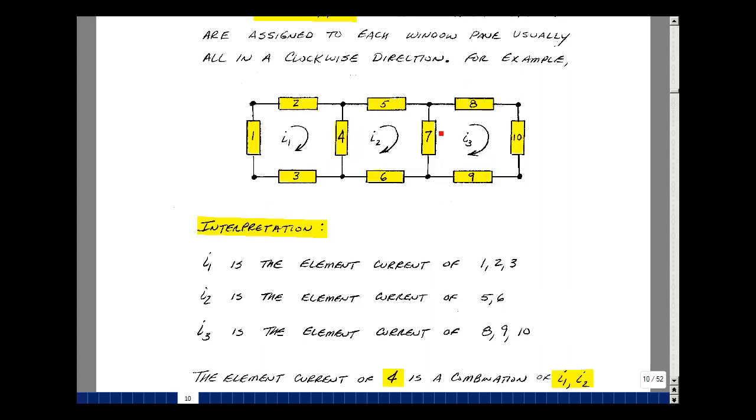Element 4 is some combination of the current I1 and the current I2. Likewise, element 7 has something related to I2 and I3. Let's see if we can solve for those.